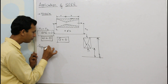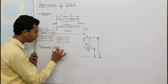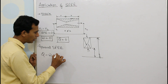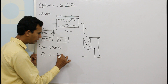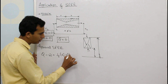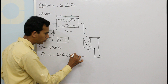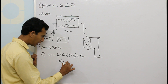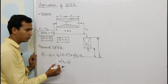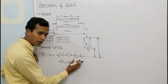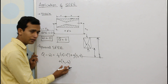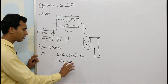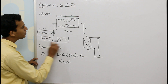The general steady flow energy equation is: Q minus W equals one-half times (V2 squared minus V1 squared) plus G times (Z2 minus Z1) plus (H2 minus H1). There are three terms: change in kinetic energy, change in potential energy, and change in enthalpy. This equation is written on a unit mass basis.